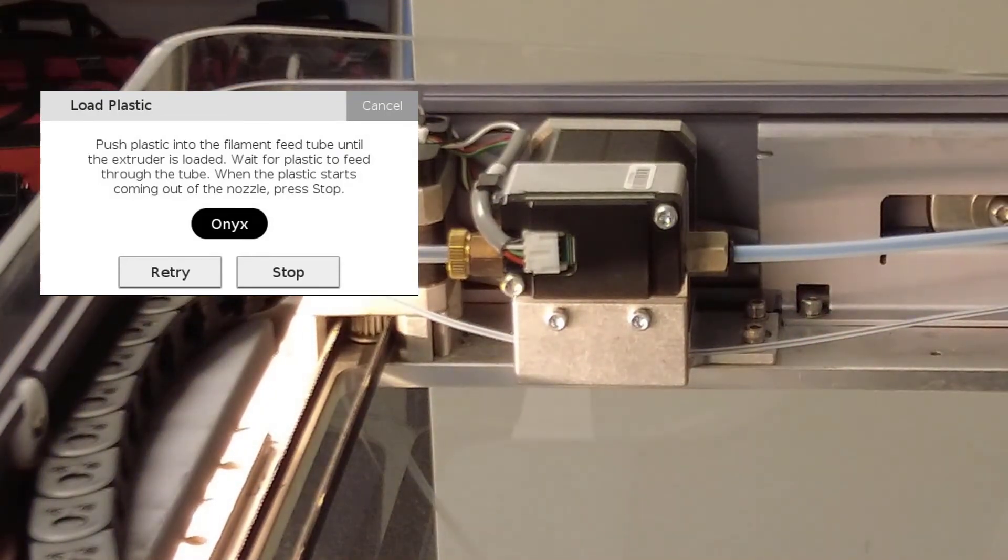Wait for the plastic filament to move through the plastic bowden tube. Once the material begins extruding from the nozzle, press stop.